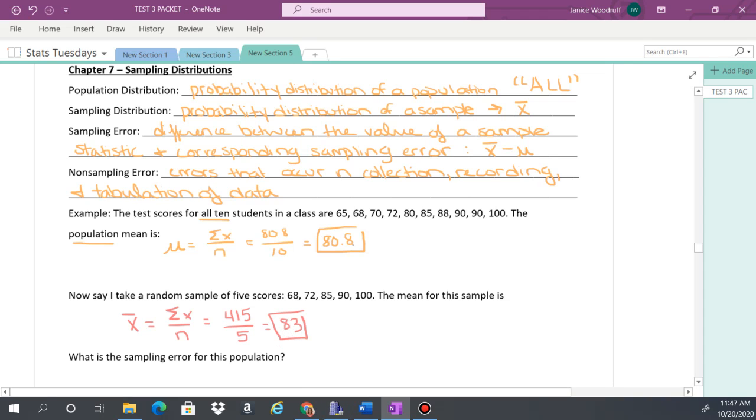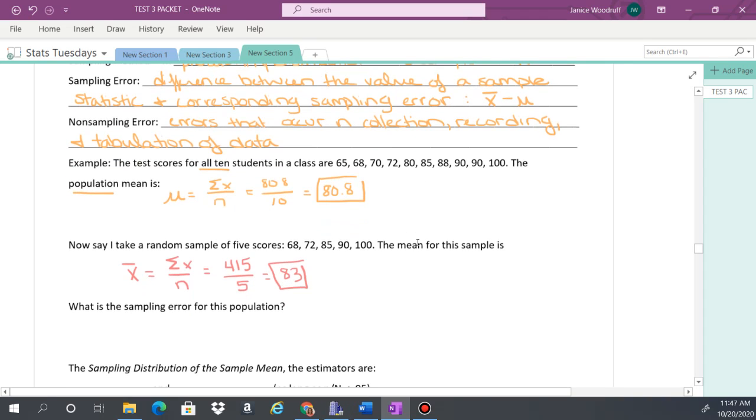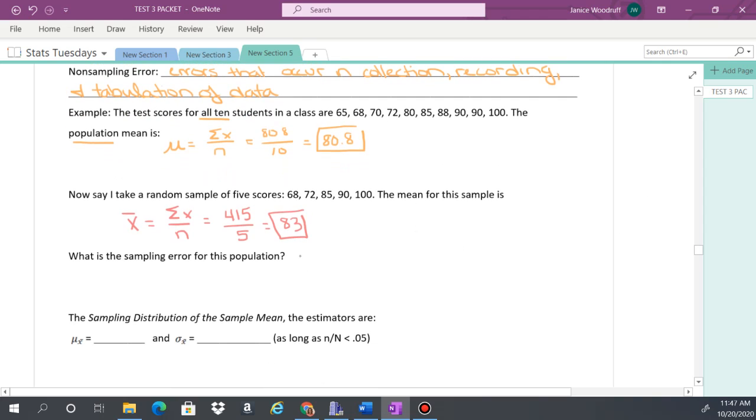Now that is the sample mean, this is the population mean. What's the sampling error? The sampling error is the sample mean minus the population mean. So 83 minus 80.8, which gives you 2.2. It's always better to have a population, but if you can't get a population, then you have to deal with the sample. But notice that there will be some sort of error in your scoring. And it's very difficult to get data for an entire population, so most of the time we do have to settle for a sample.